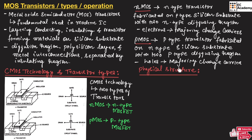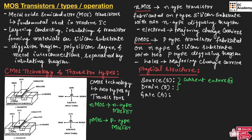Let us understand the physical structure of the MOS transistor. Both N-type and P-type MOS transistors consist of source (S), drain (D), and gate (G) — these are the three terminals. The source and drain terminals are the terminals where current enters or exits the transistor.